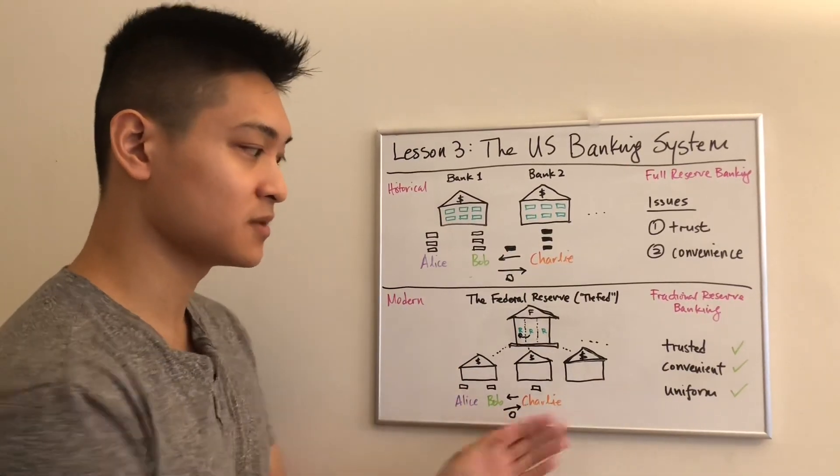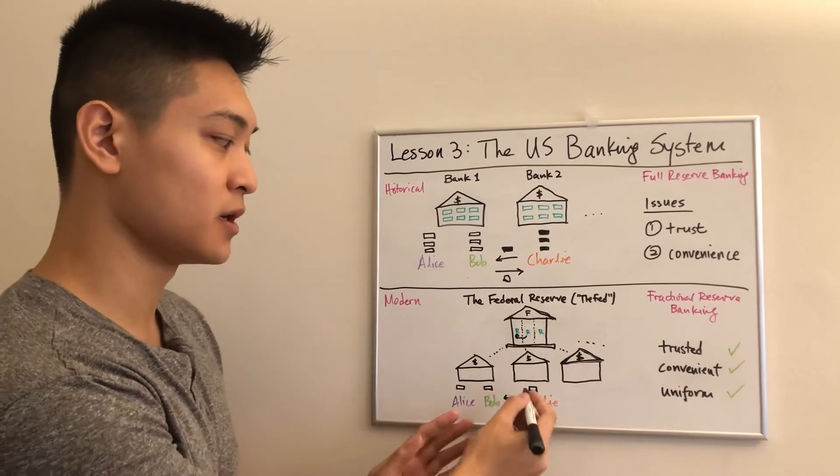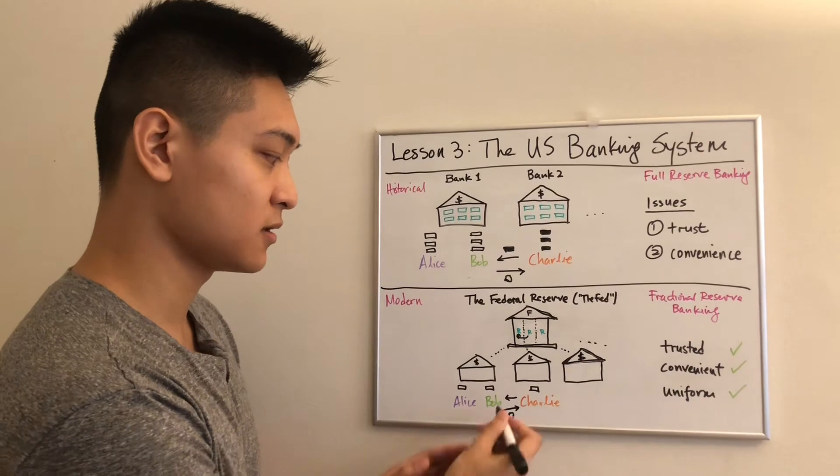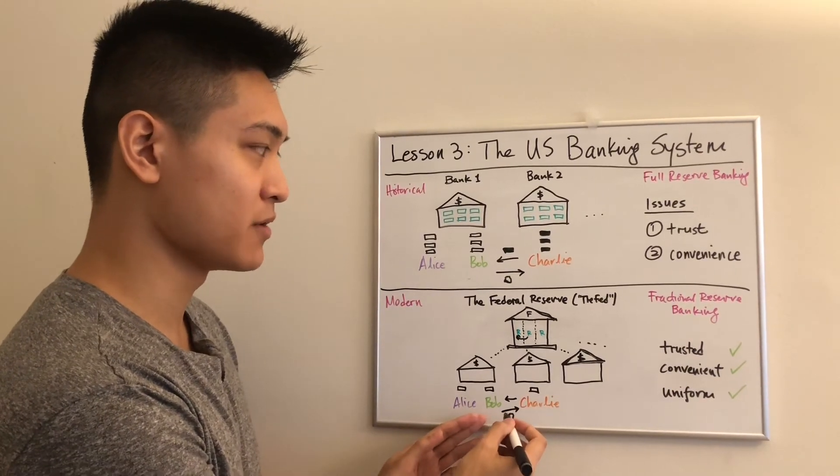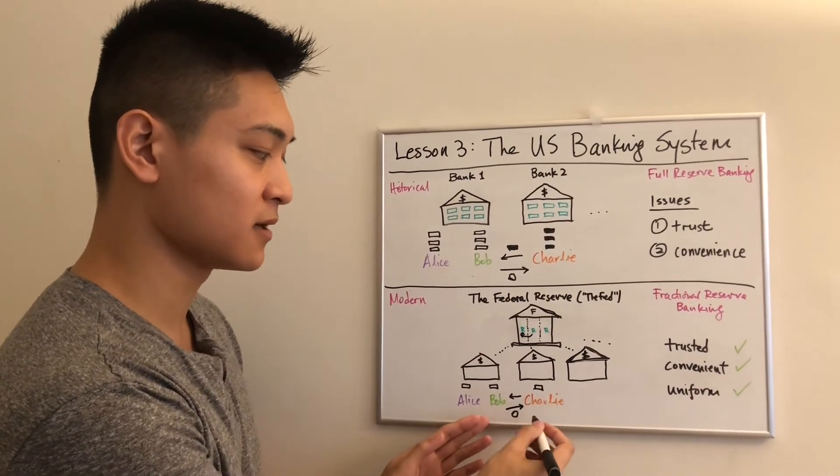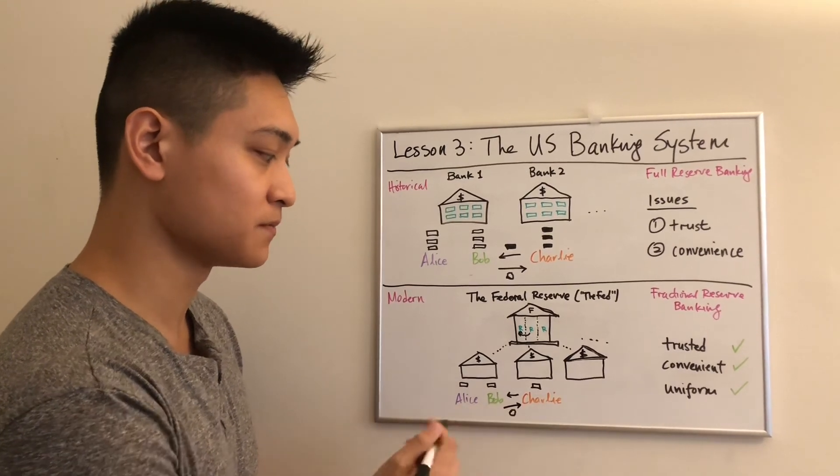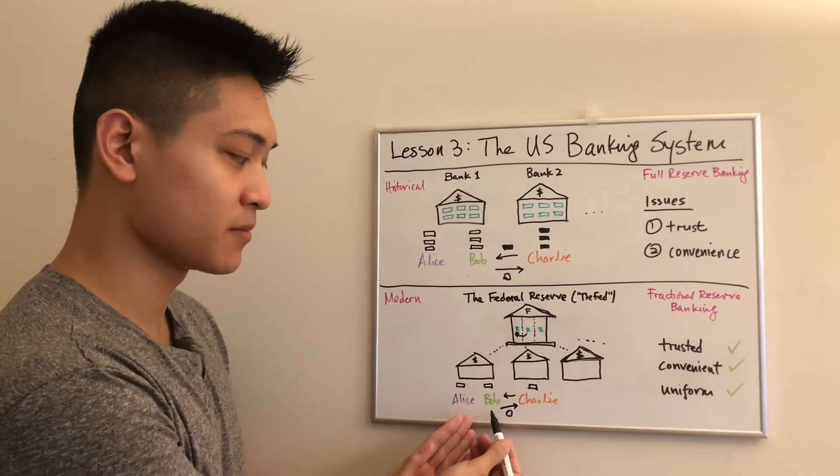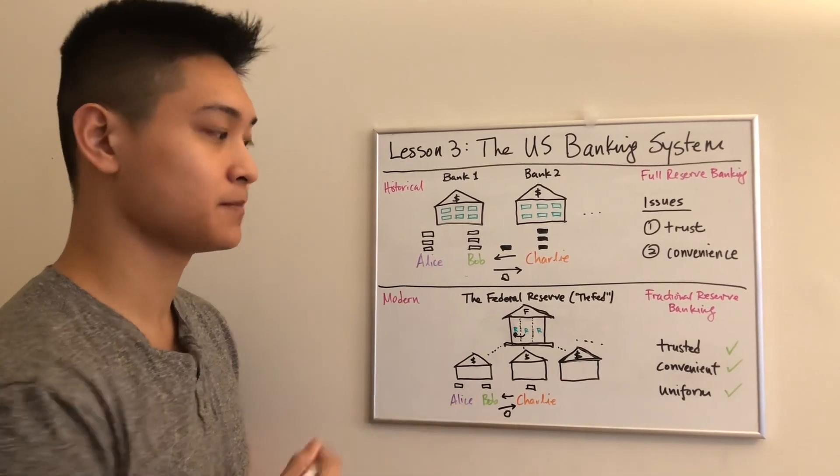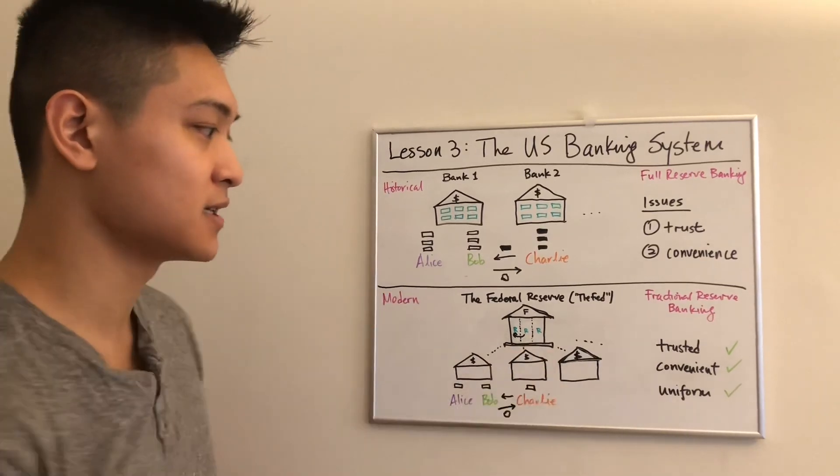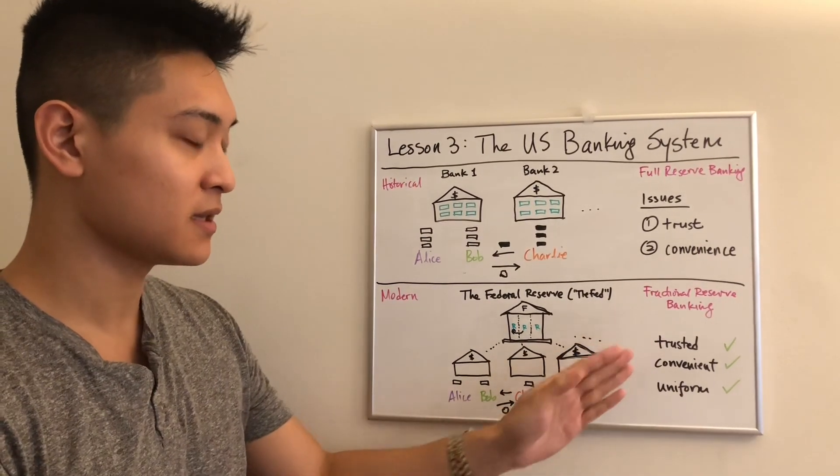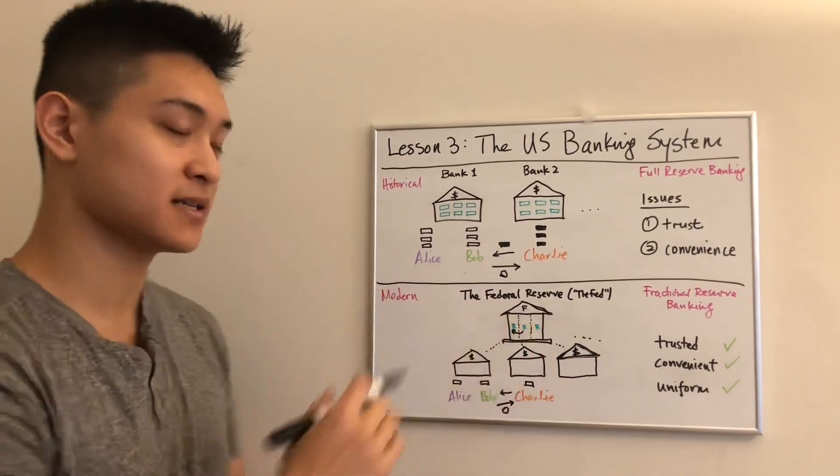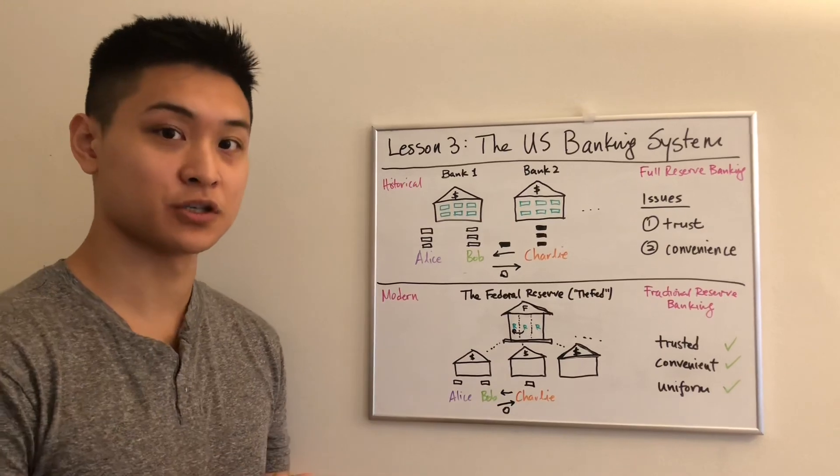It's also trusted because now we have a uniform number in our banking accounts so that Bob doesn't have to worry about numbers in bank two and Charlie's bank being any different from his own. All that happens is the numbers in Charlie's bank go down and the numbers in Bob's bank account go up. So now with this system, we have a trusted system that is convenient and uniform, and this system has now evolved to support a larger and growing economy.